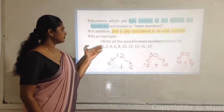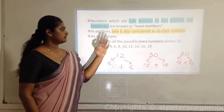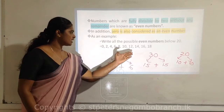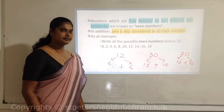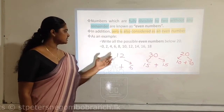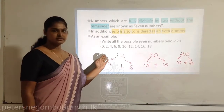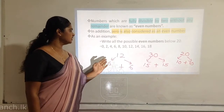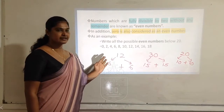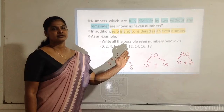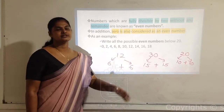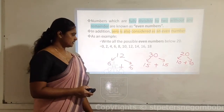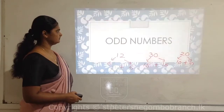As an example, we can say even numbers below 20. All these are even numbers below 20, starting with zero. Zero is the smallest even number. From that, one after the other in the sequence of numbers, we can nicely identify all the even numbers.